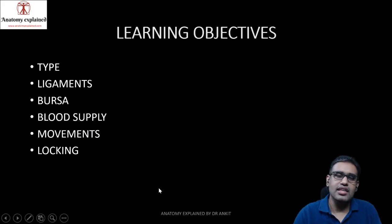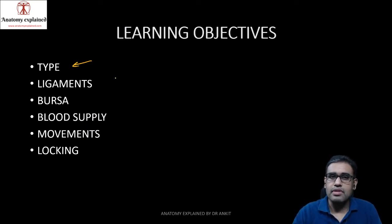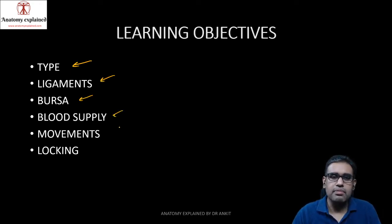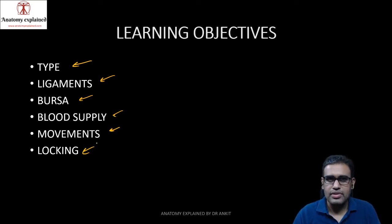These are the learning objectives under which we are going to discuss today's topic. Because the topic is a little bigger, we will cover: the type of the knee joint, the ligaments, the bursa, the blood supply, the movements, and about locking and unlocking.